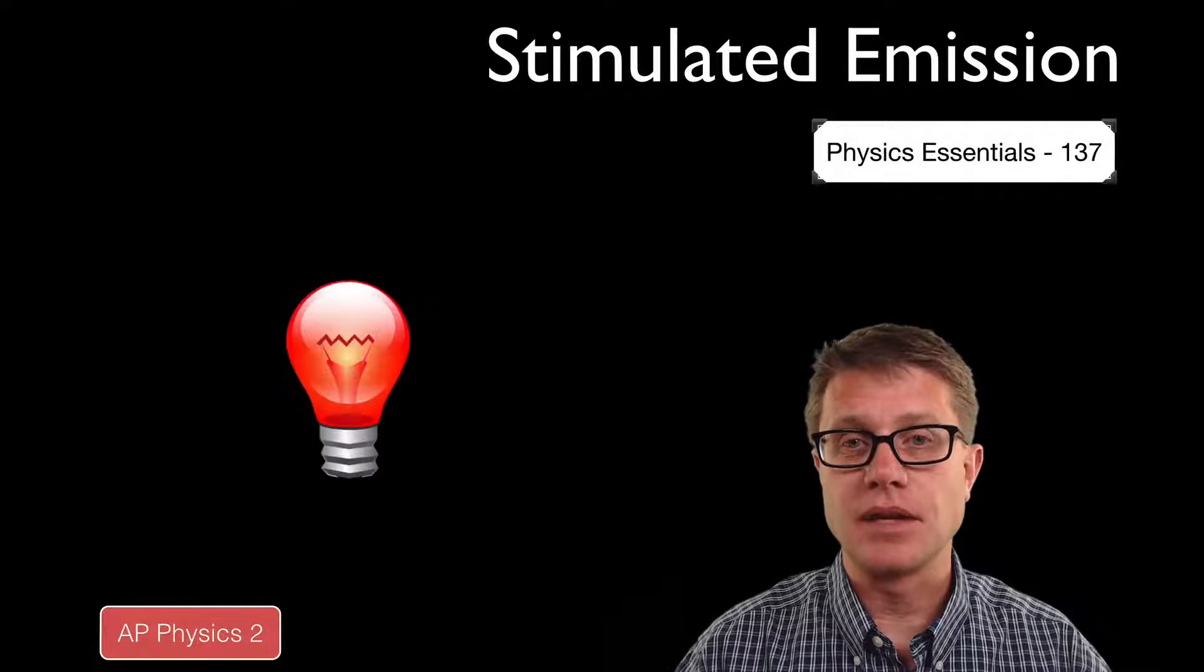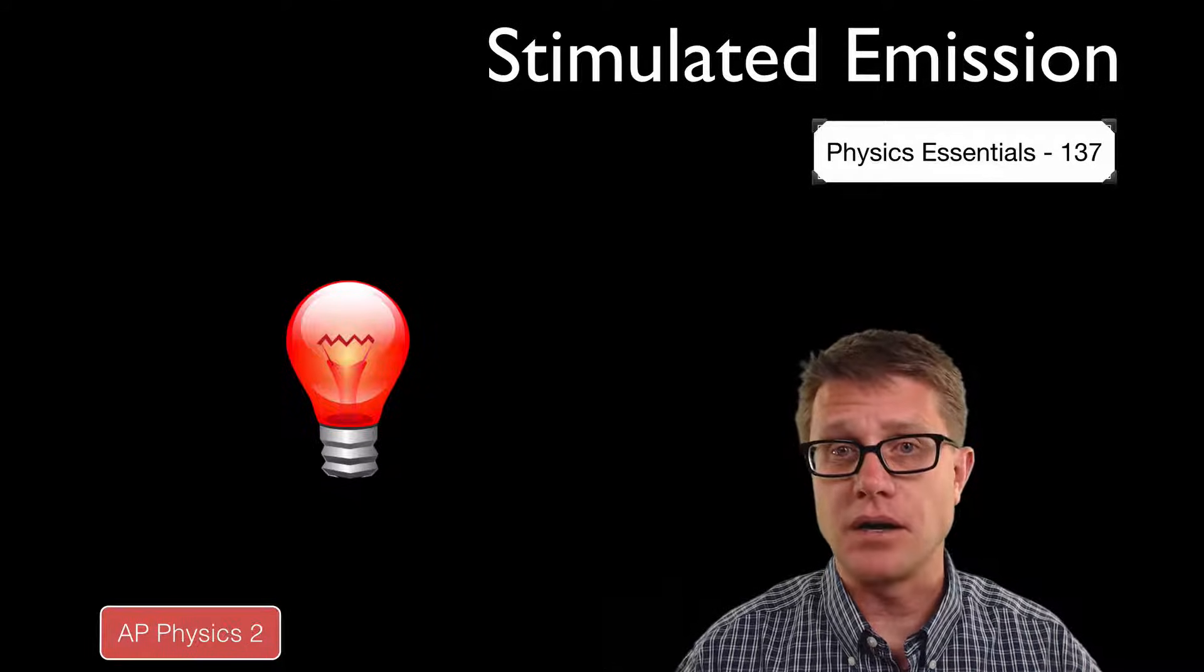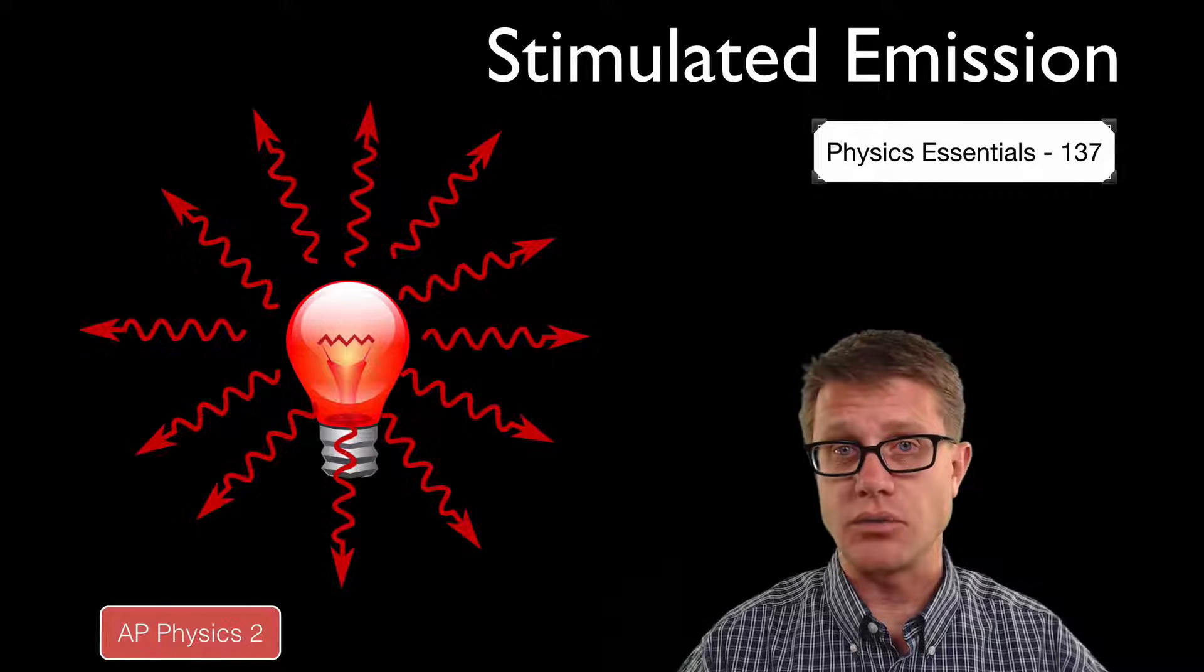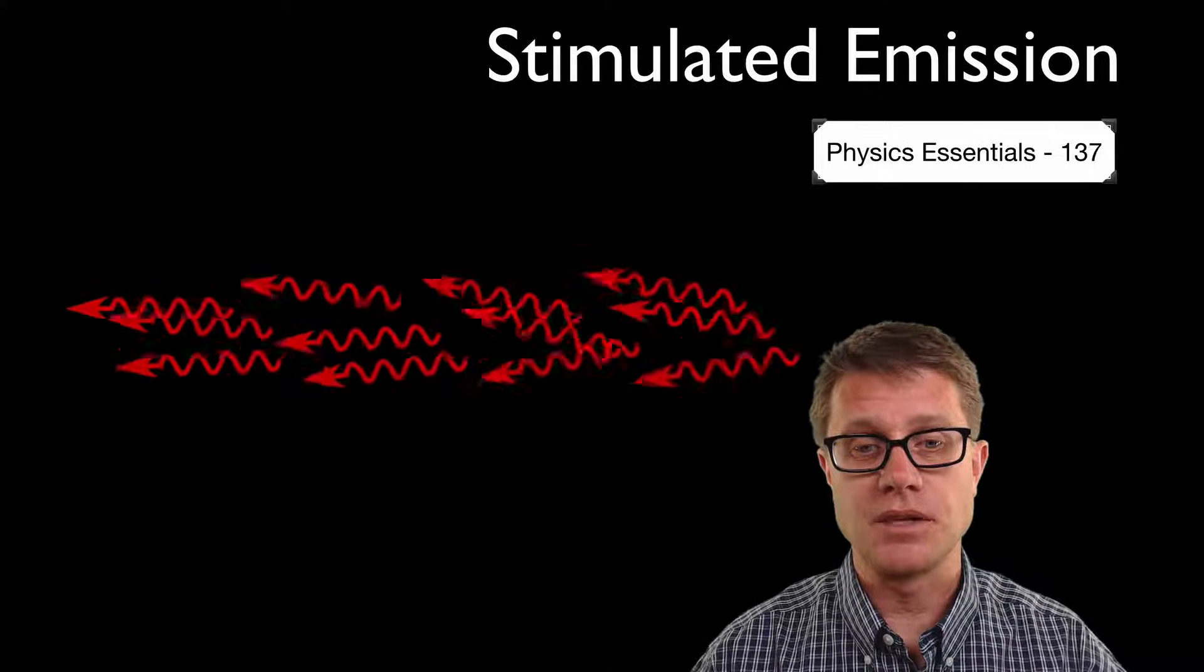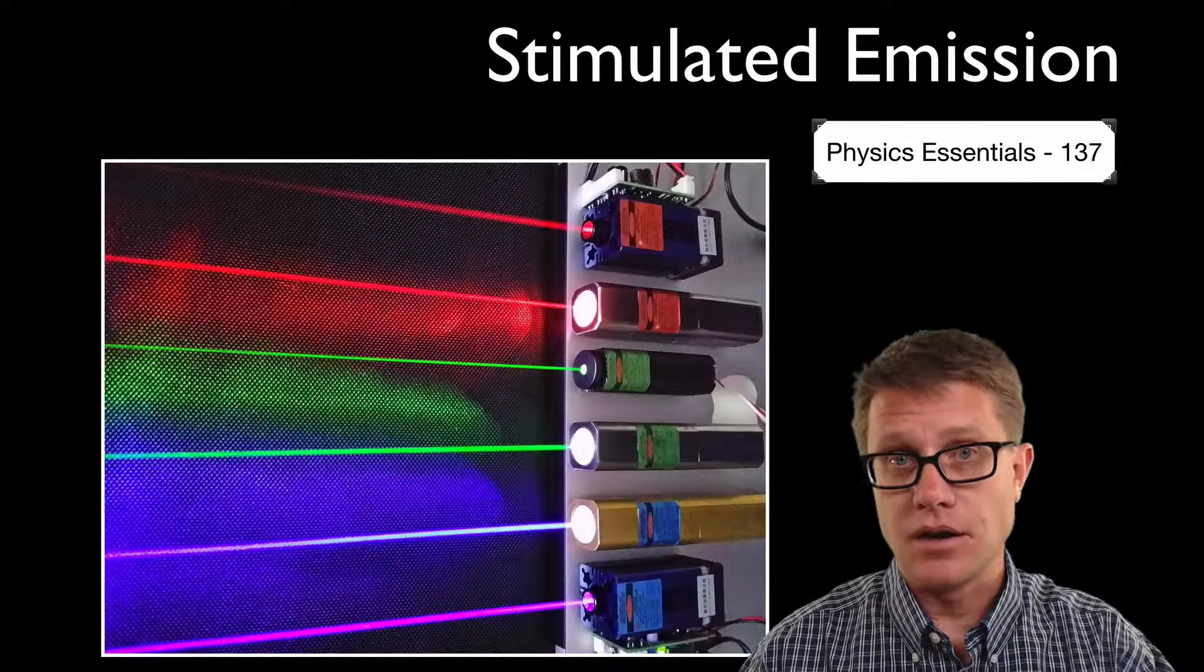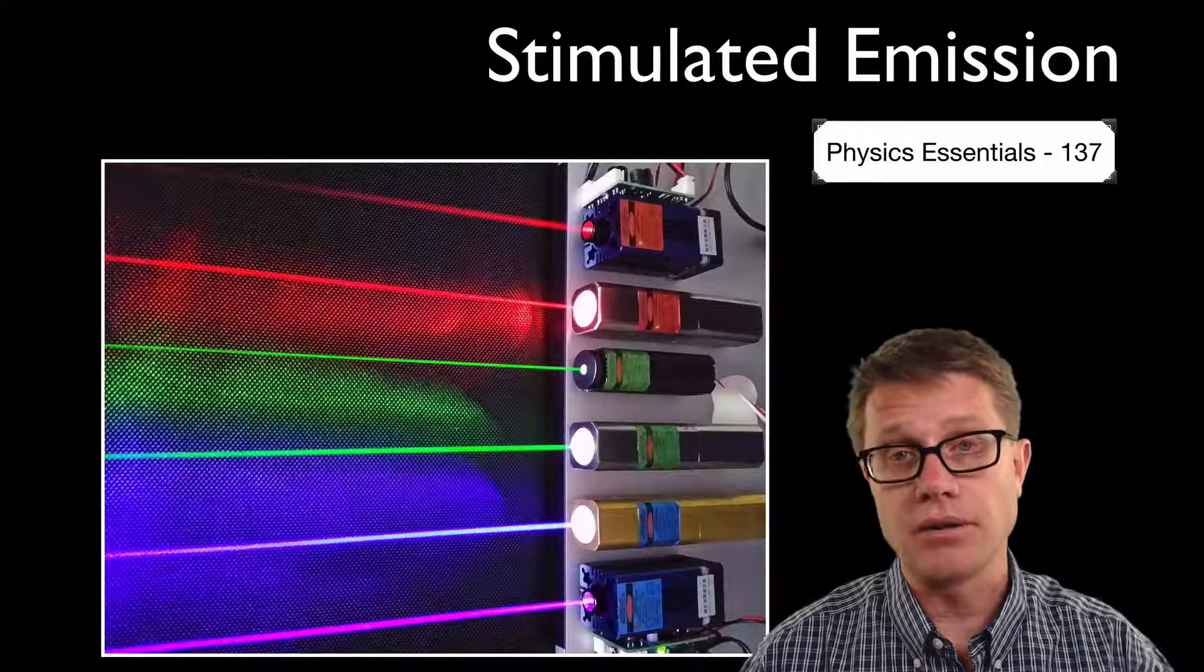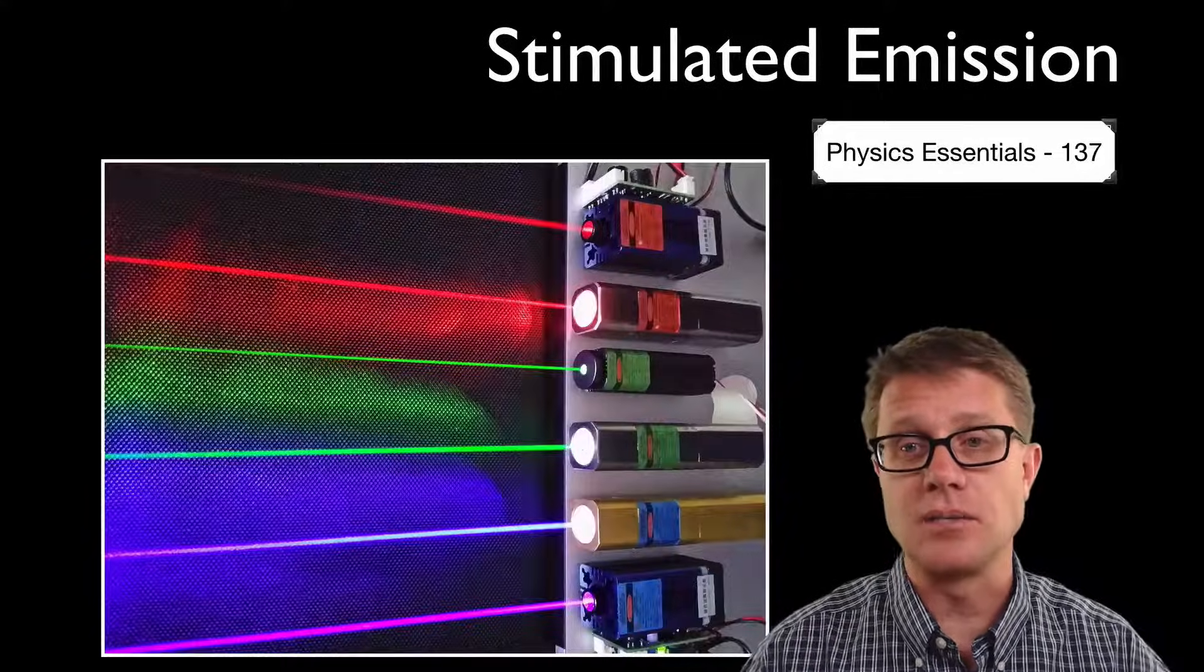Imagine we had a red light like this. What kind of photons would it give off? It would give off red photons in all different directions. But wouldn't it be cool if we could take all of those photons and point them in the same exact direction? We can. That is called a red laser. They are all going coherently or in the same direction, and we create that using stimulated emission.